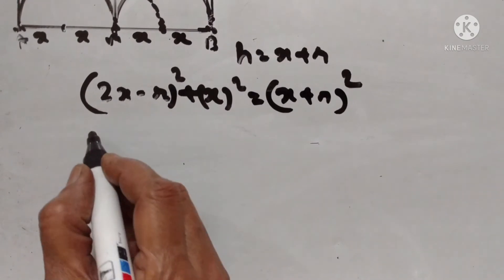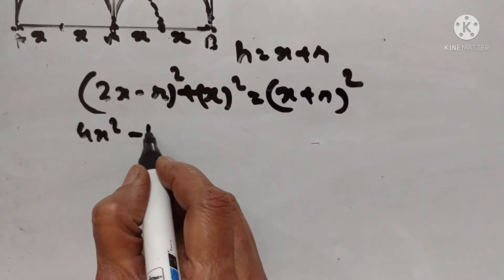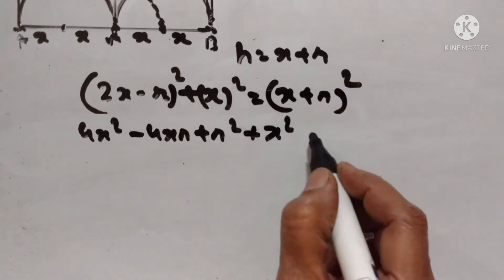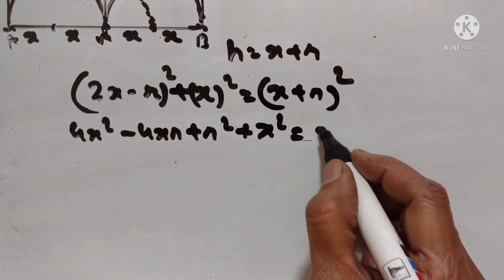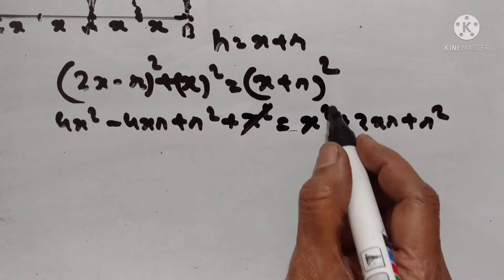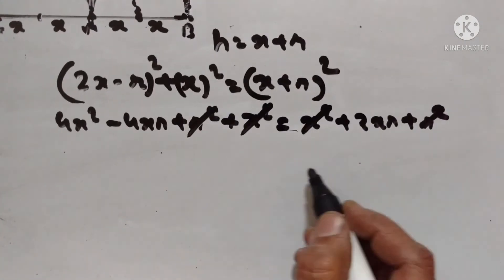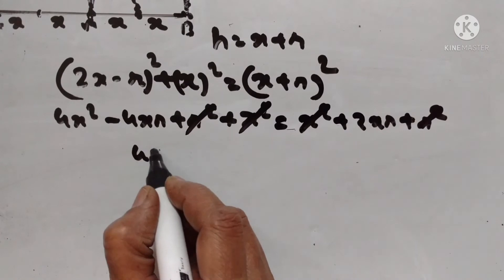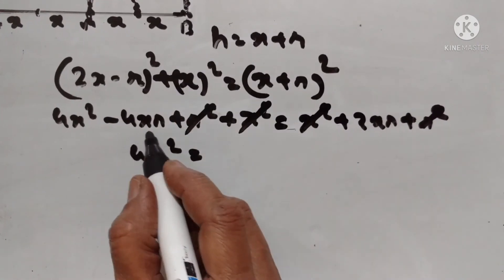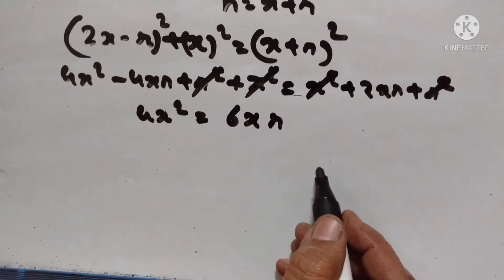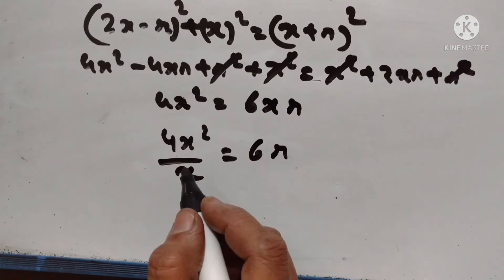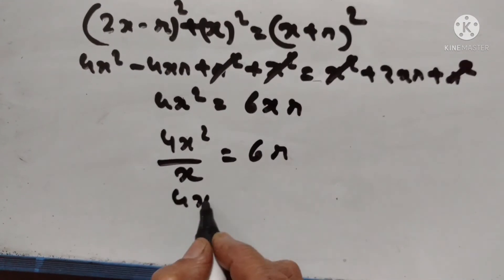Using the algebraic identities, expanding gives: 4X² minus 4XR plus R² plus X² equals X² plus 2XR plus R². The X squared and R squared terms cancel from both sides. So 4X² equals 6XR, and dividing both sides by X gives 4X equals 6R.